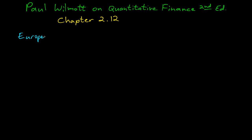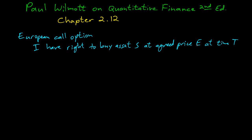A European call option means that I have the right to buy some asset S at a fixed price, the agreed price E, at a fixed time, capital T. S of T is the asset price, E is the exercise price, and T is expiration time.